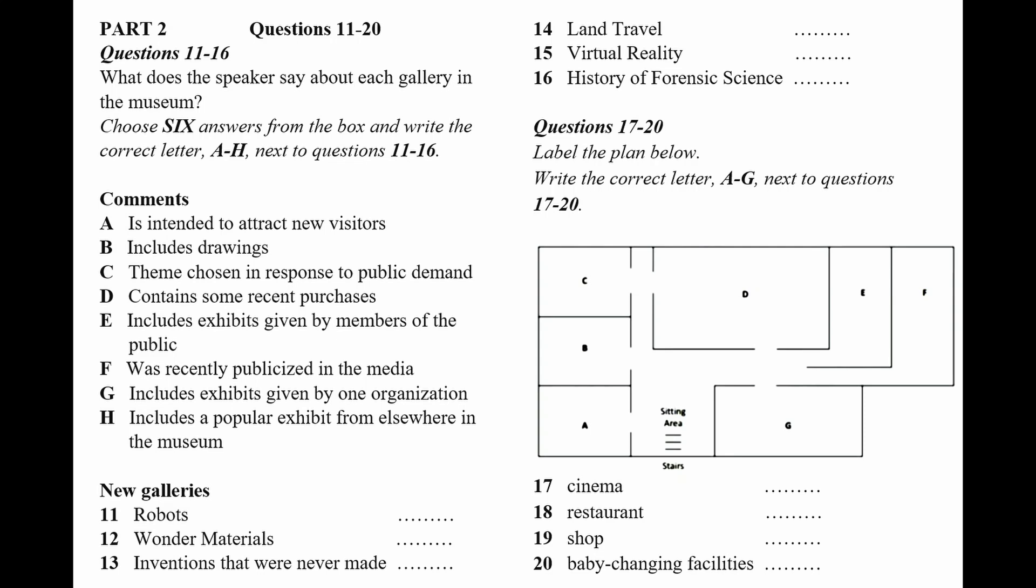Now listen carefully and answer questions 11 to 16. Good morning. I'm glad you were all able to come in this morning for a quick briefing on the new wing of the museum, which is due to open in a fortnight. There are six new galleries, plus some other facilities, adding about 40% to the total floor area. When I finish talking, please feel free to spend some time wandering round and getting familiar with the exhibits. As I said, we have six new galleries, each focused on a particular theme. The Robots Gallery contains a number of machines and numerous sketches by inventors, illustrating the 500-year-long quest to produce machines with human qualities and physical characteristics. There are also cartoons of robots from books and comics, showing how robots have long been a big part of popular culture.